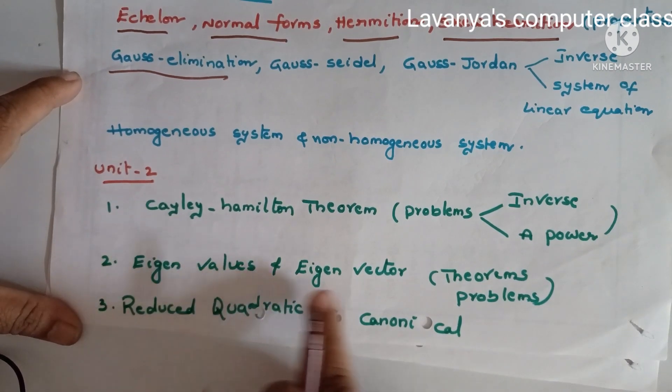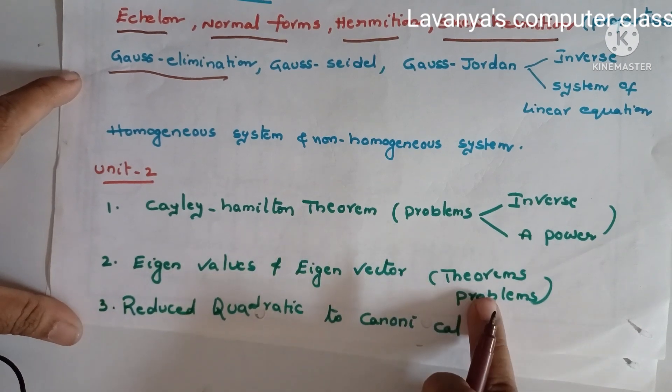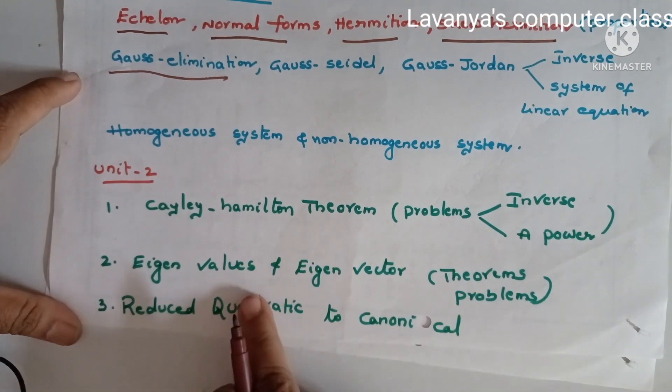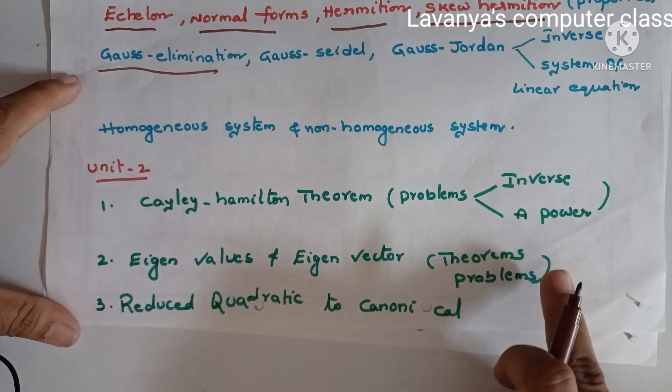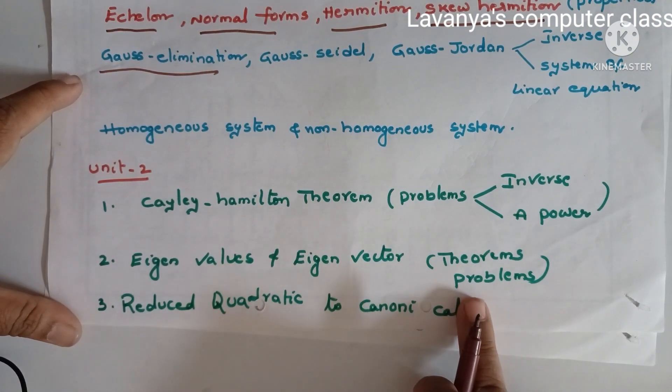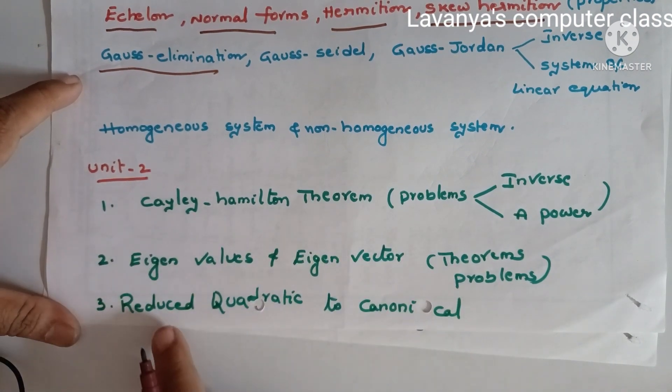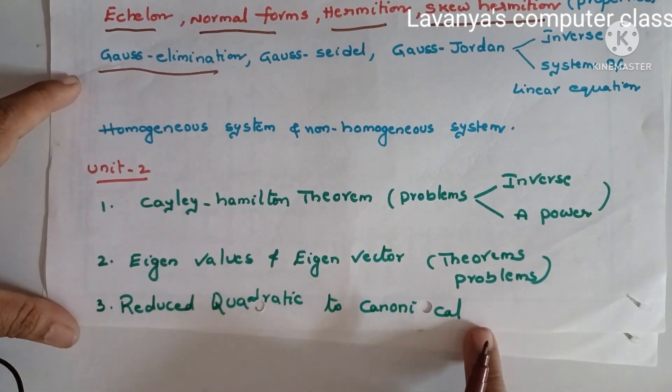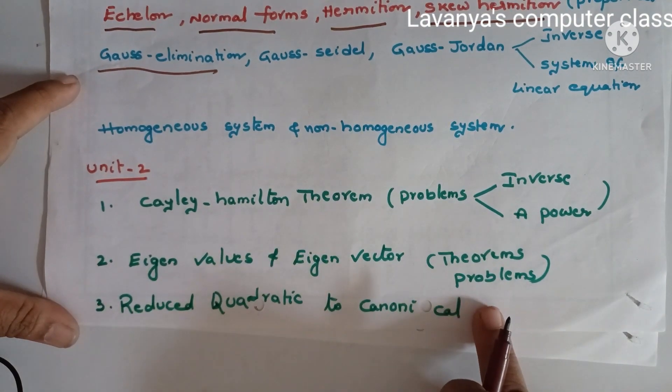Next one is eigenvalues and eigenvectors problems. These are not theory. Actually there are eigenvalues and eigenvector theorems, but not theorems, only problems. These are also very important questions. And one more thing is reduced quadratic to canonical forms.